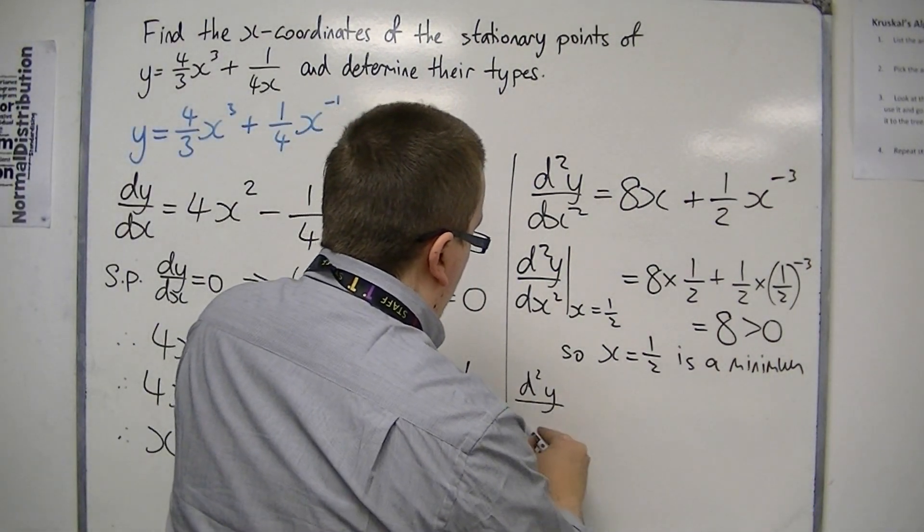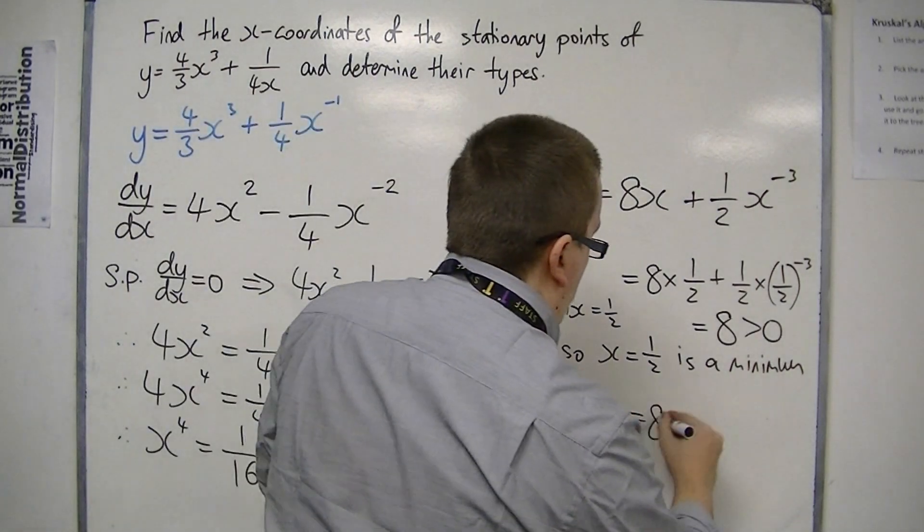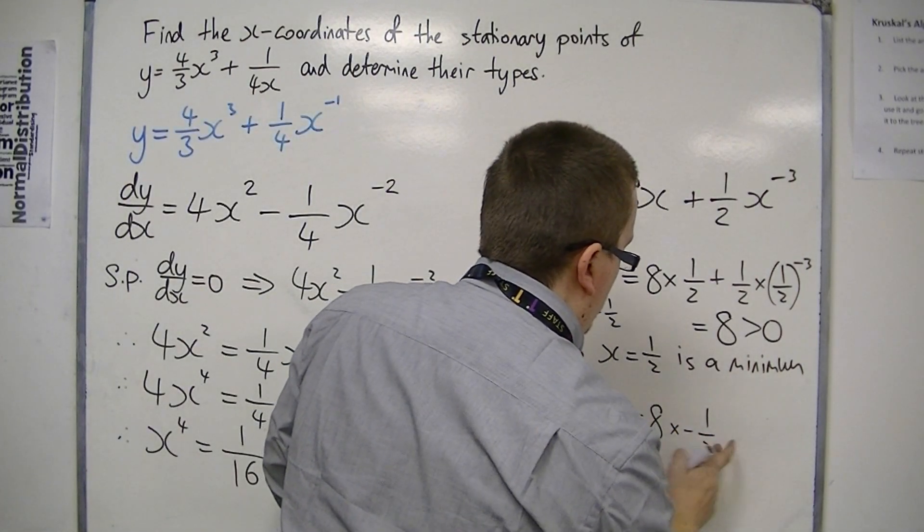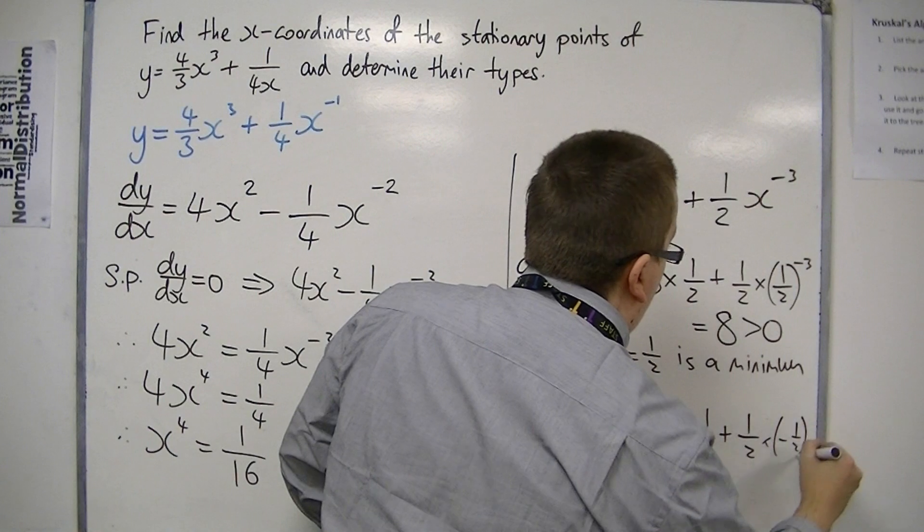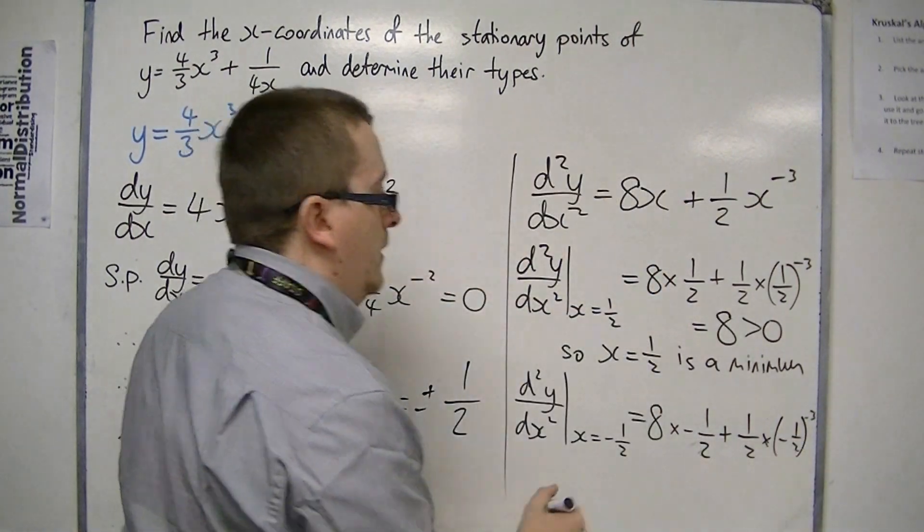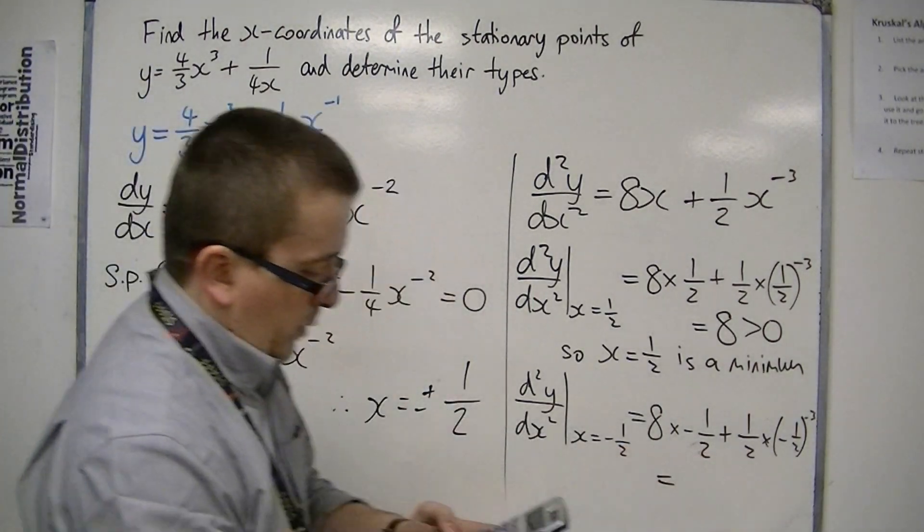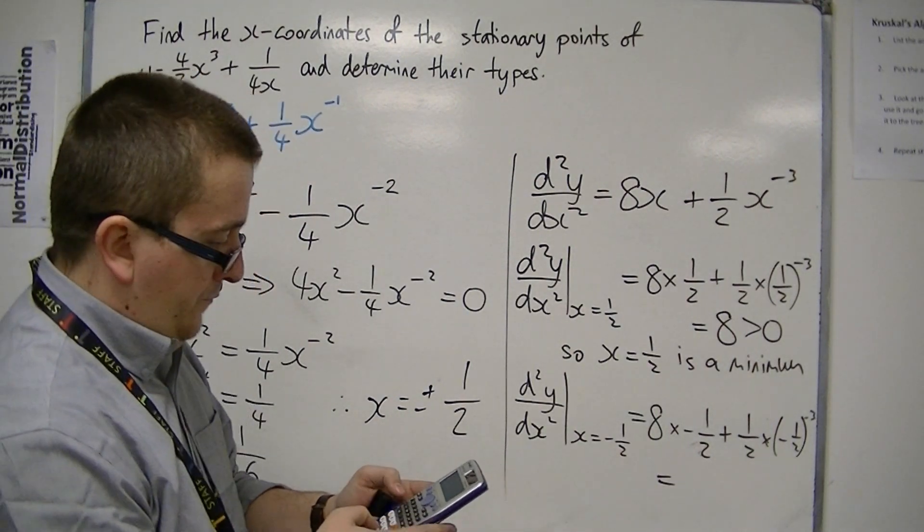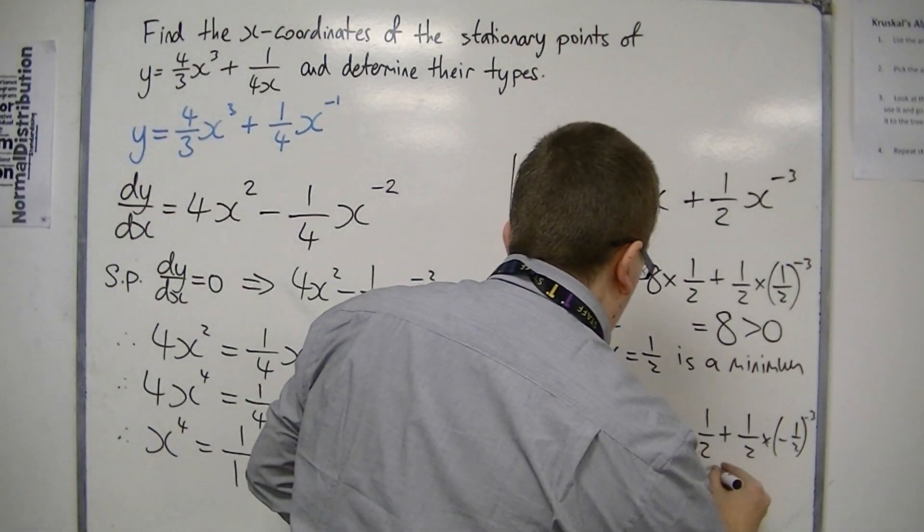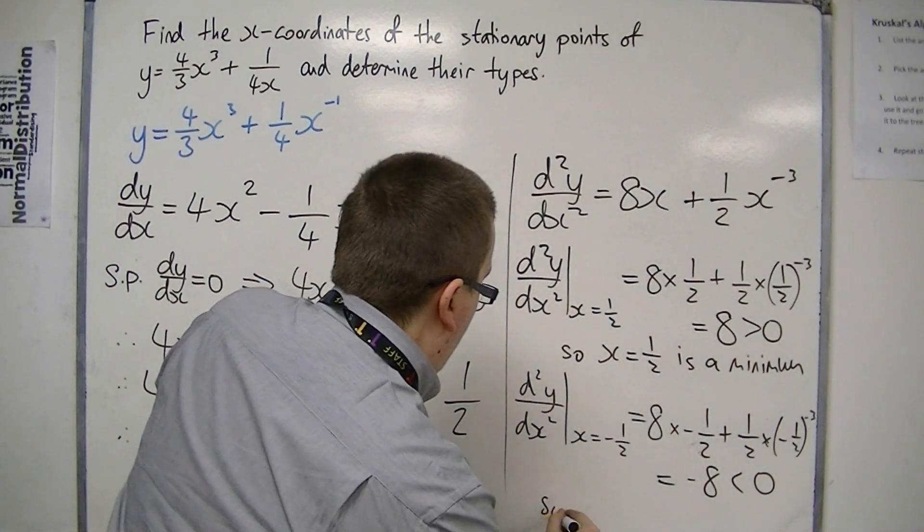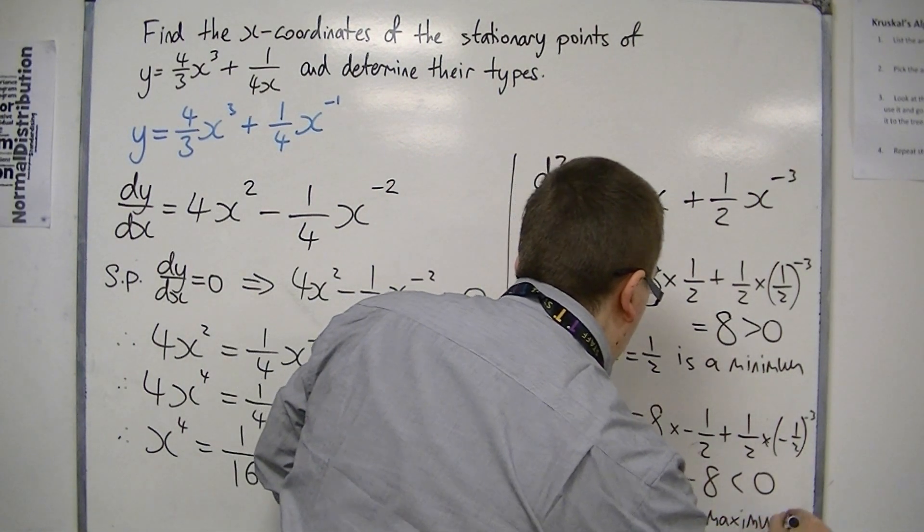I then need to find the second derivative when x is -1/2, so 8 times -1/2, plus 1/2 times (-1/2)⁻³. So I have -4 plus 1/2 times (-1/2)⁻³, which is -8. Now that's negative, so x equals -1/2 is a maximum, because the second derivative is negative.